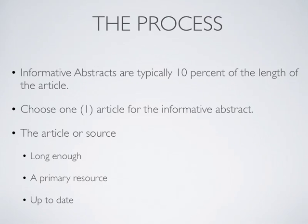The process: typically informative abstracts are 10% the length of the article. So if you have a 10-page article, an informative abstract would typically be one page. If the source is 100 pages long, it would be roughly 10 pages. The longer the article, the more fuzzy the length gets — it's not an absolute formula that you have to fit at exactly 10%, but it's a good starting point.